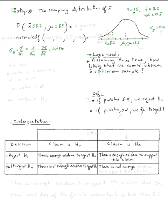Using a normal CDF on the calculator, we go from negative 1000 to 8.2, with mean 8.5 and standard deviation 0.084. The result is approximately 0.0001775. We call this the p-value. The definition says if the p-value is less than or equal to alpha, we reject h0.